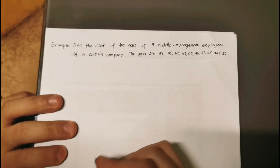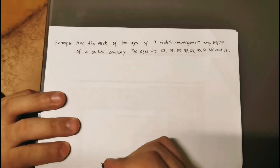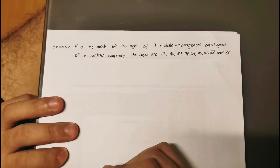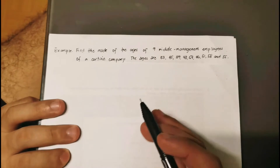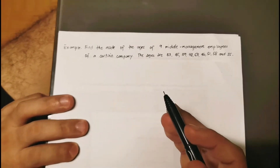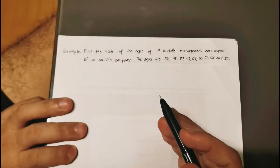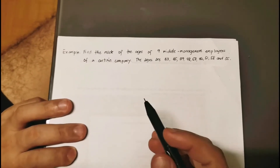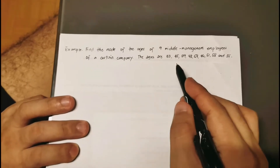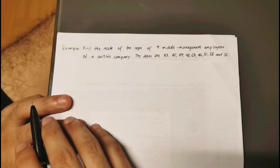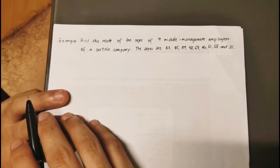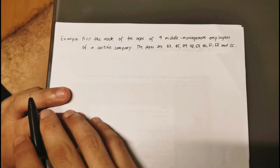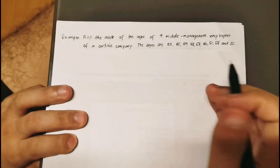Our example for finding the mode of a given data set: find the mode of the ages of nine middle management employees of a certain company. The ages are as follows: 53, 45, 59, 48, 54, 46, 51, 58, and 55 years old — nine ages in total.